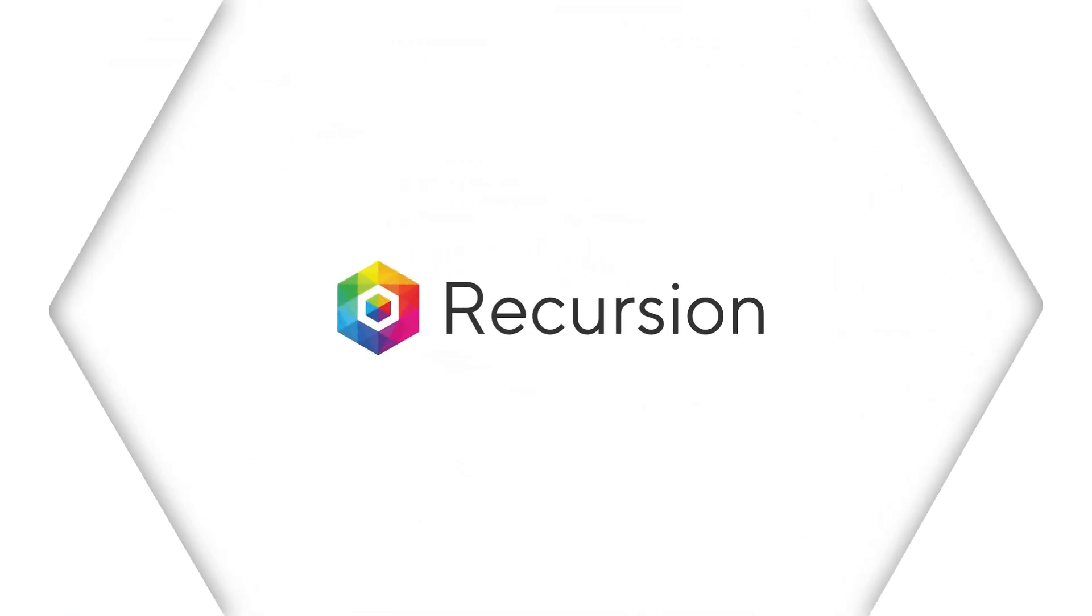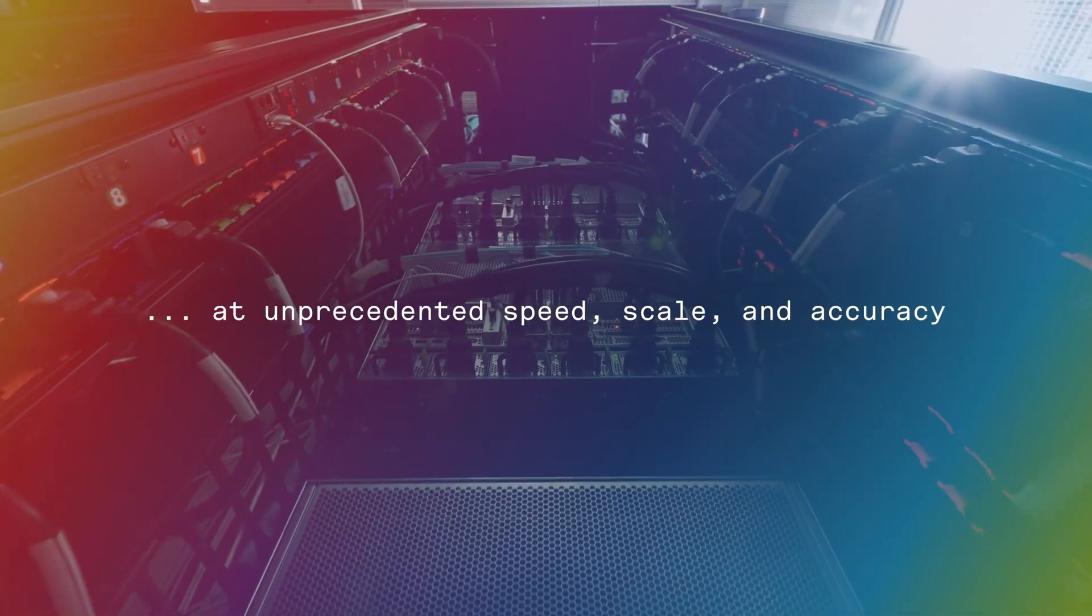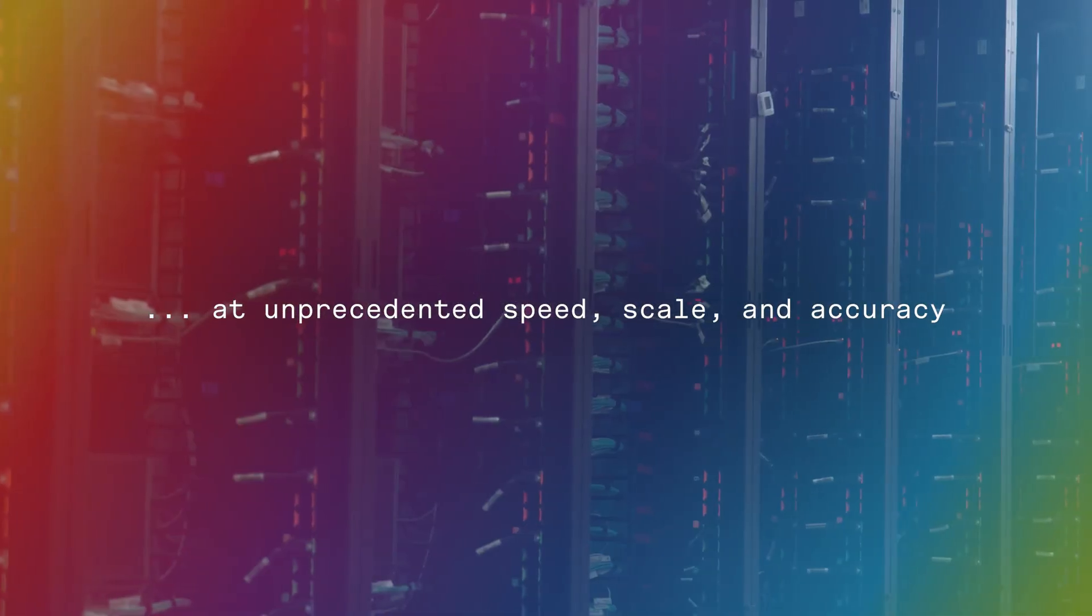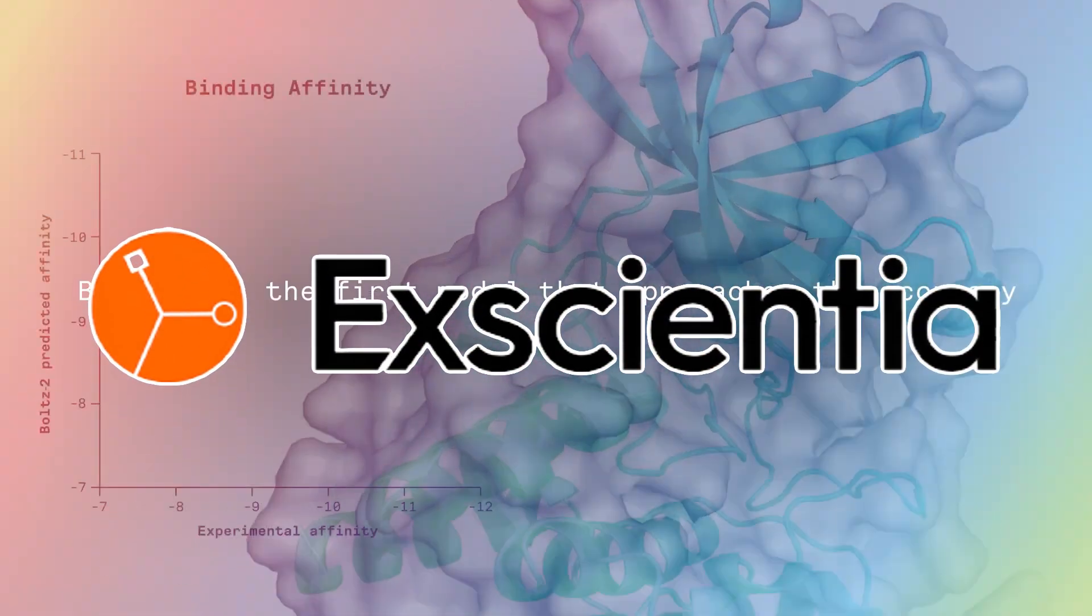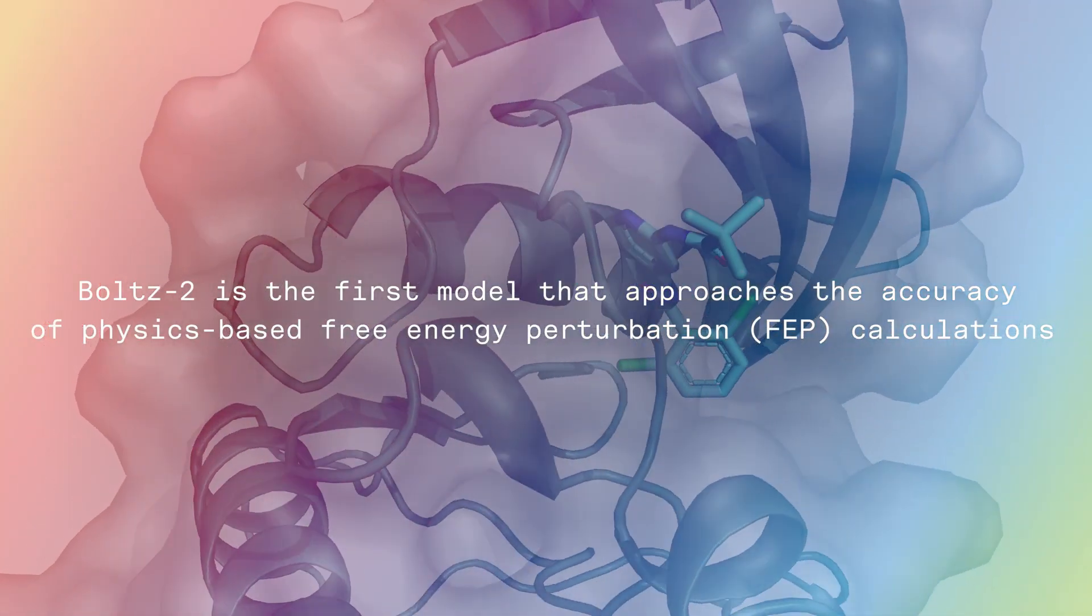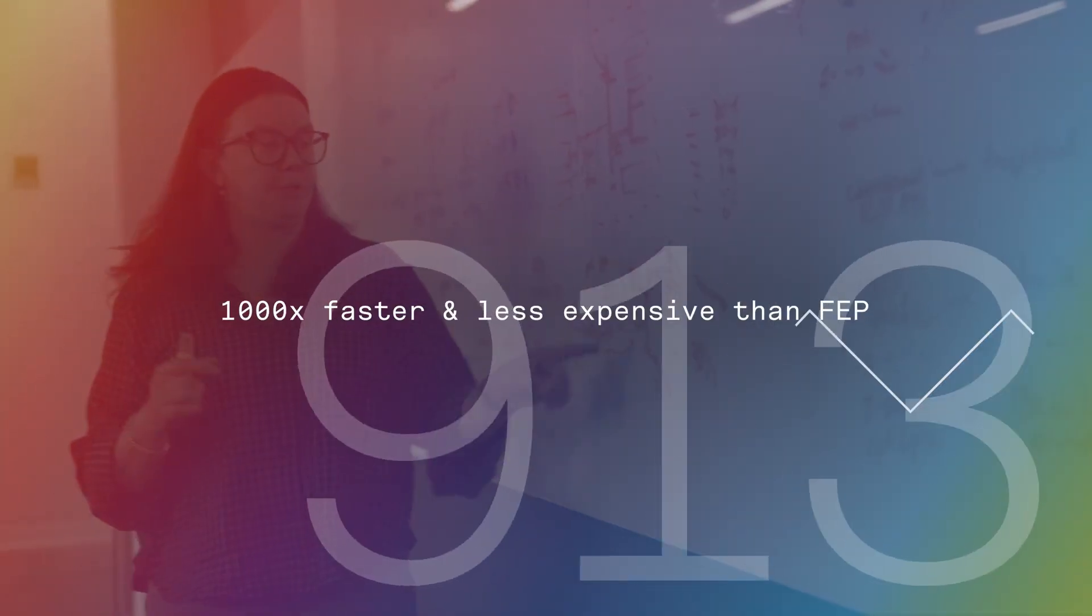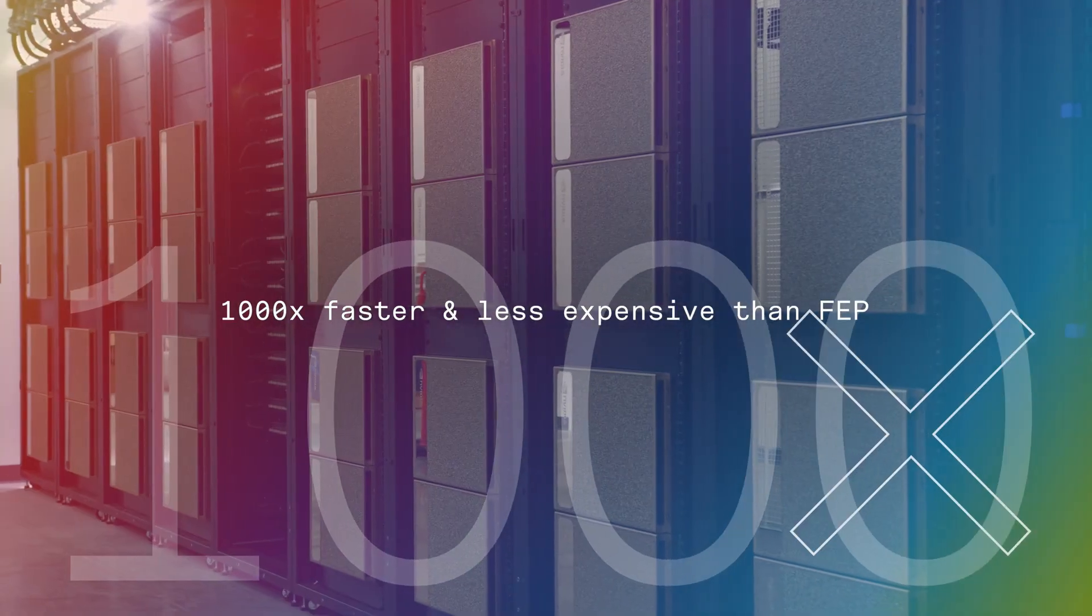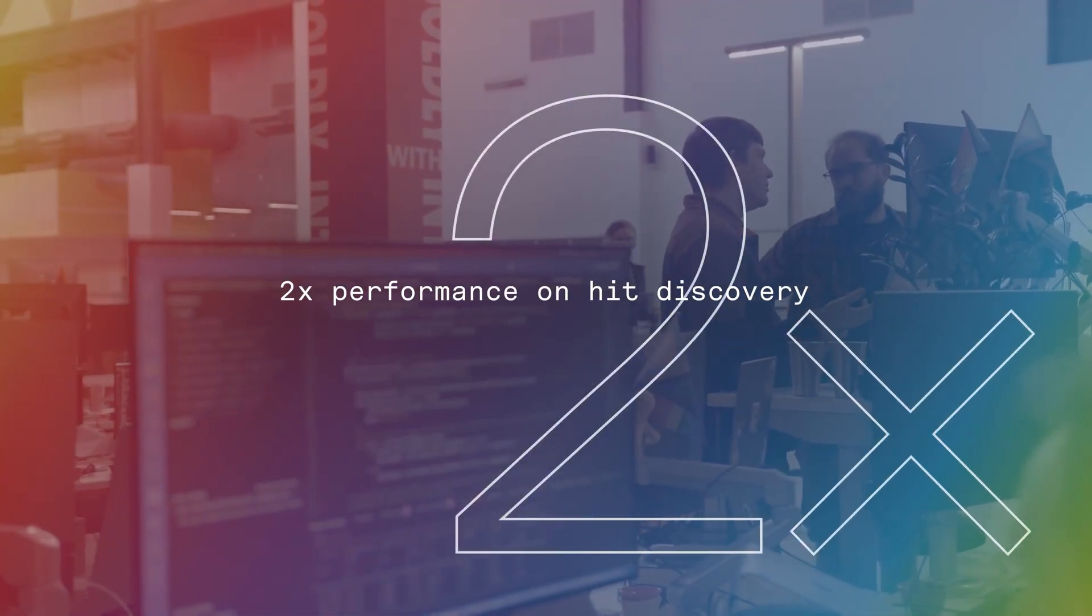Then comes Recursion Pharmaceuticals, which is taking scale to the extreme. Using automation, massive datasets, and AI models, they're running experiments on millions of cells at once and feeding the results back into their system. And with their merger with Excientia, Recursion now combines AI biology with precision chemistry, giving them an end-to-end engine for drug discovery. If Abcelera is about finding the right antibodies, and Schrodinger is about designing molecules smarter, Recursion is about industrializing the whole process.